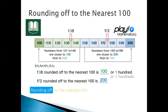Numbers from 102 to 149 are closer to 100 than to 200. You can see that 200 is very far away — 141, 151, 161, 171, 181, 191, 200. So 138 is closer to 100, and that's why we round off 138 to 100.